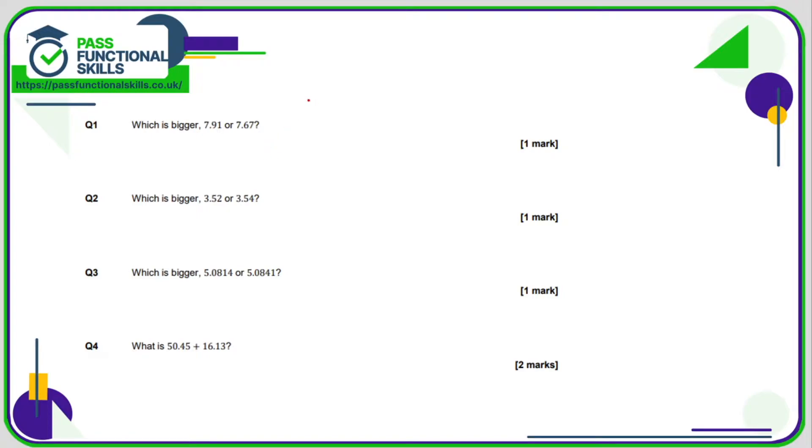Question number one, which is bigger, 7.91 or 7.67? In the units column everything is the same, but in the tenths column we've got a 9 and a 6. 9 is bigger than 6, so 7.91 is bigger than 7.67.